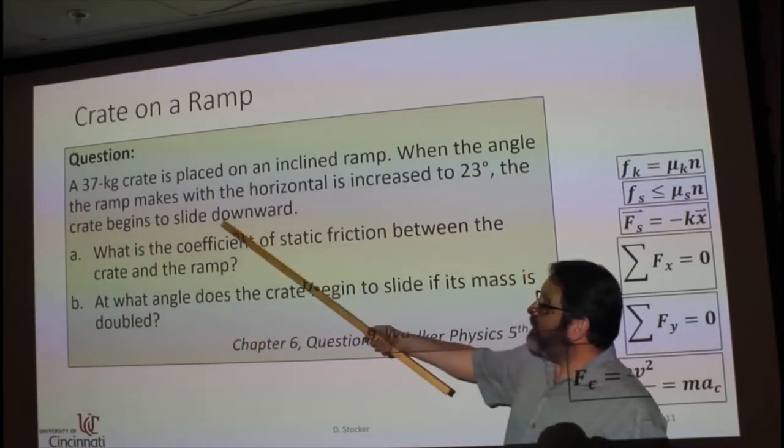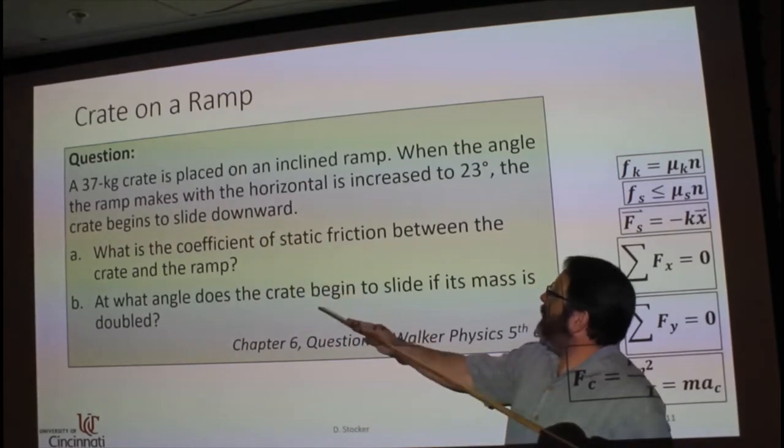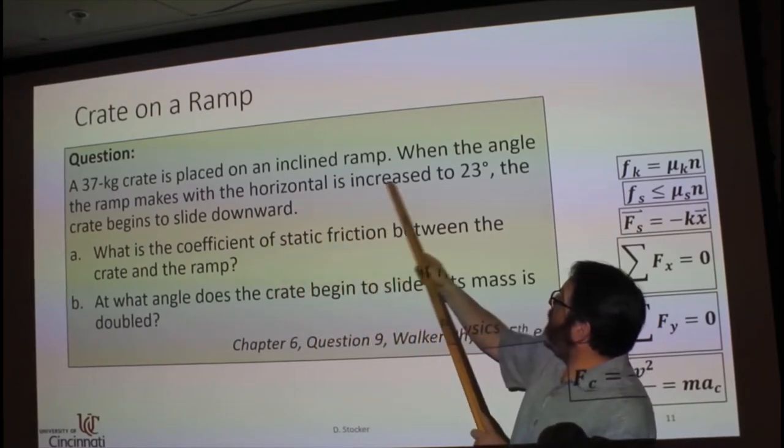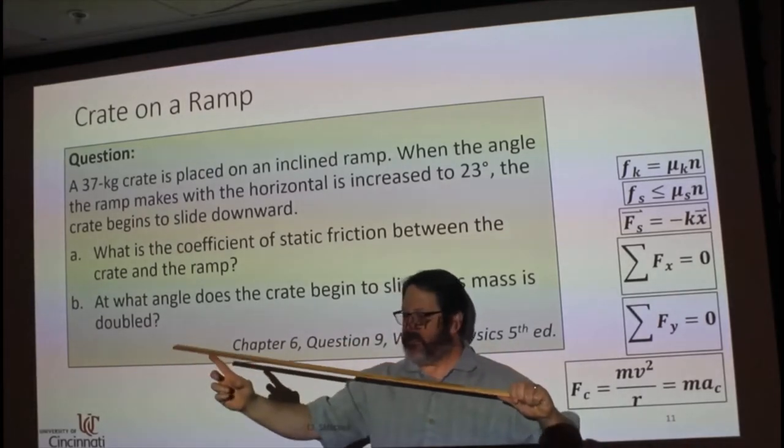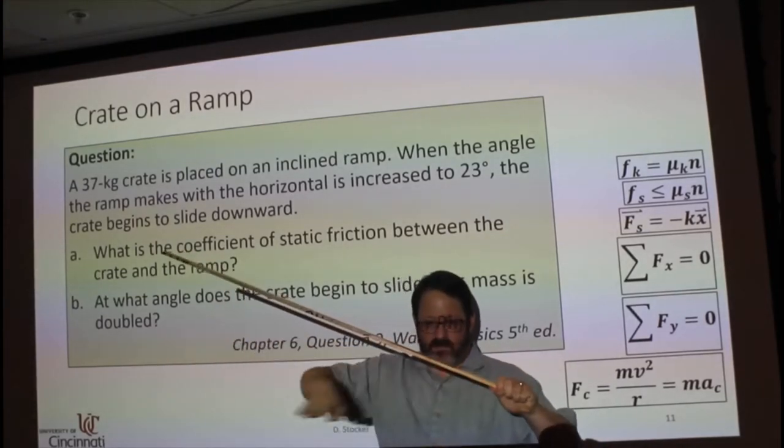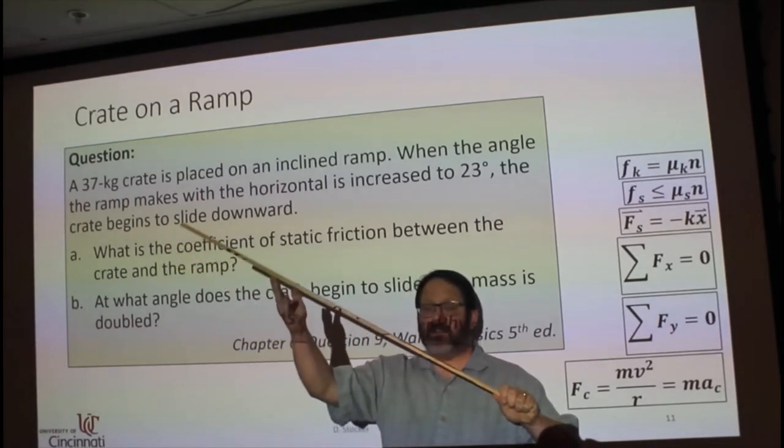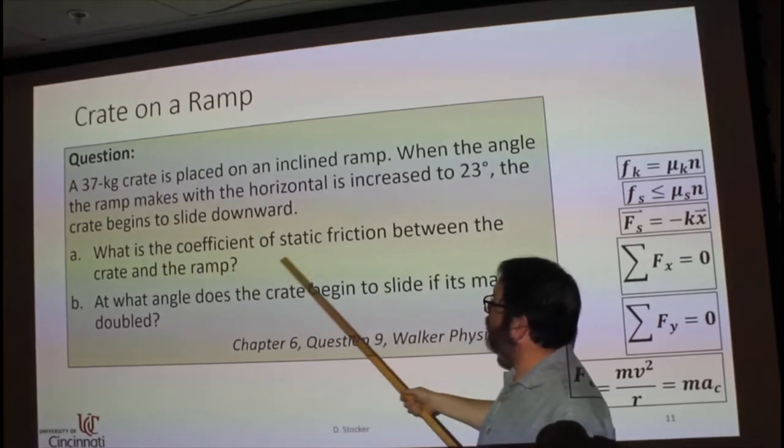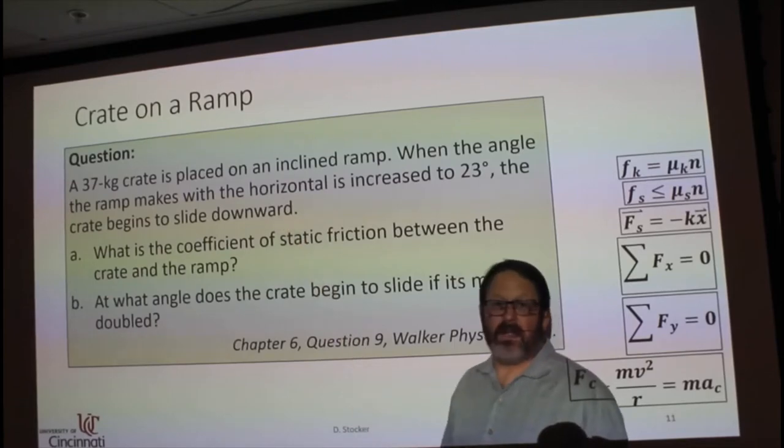In this one, a 37 kilogram crate is placed on an inclined ramp, and when the ramp makes an angle with the horizontal of 23 degrees—so it must be starting low and then being increased until the angle hits 23 degrees—when that happens, the crate starts to slide. So the question is, what is the coefficient of static friction between the crate and the ramp?